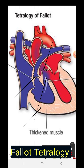Right ventricular flow obstruction results in delayed P2, and P2 is reduced in intensity because of reduced pulmonary pressure. Only A2, the aortic component of the second heart sound, is audible.